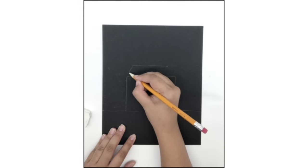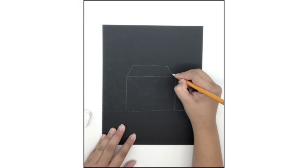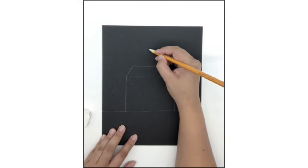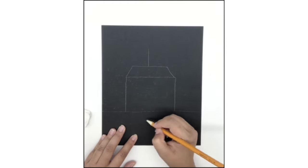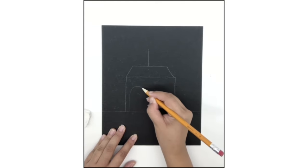Step 2. Connect the top line to the rectangle for a rooftop. Split the second story in half and then draw a door on the left side of the first story.